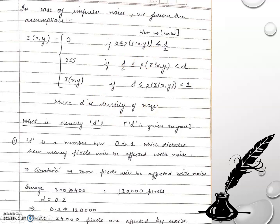Now, d is the density of noise — a term we haven't discussed in earlier videos. Whenever you're asked to manipulate an image with impulse noise through numericals, the value of d will be given to you. The density d is any number between 0 and 1, and it dictates how many pixels will be affected by the noise.